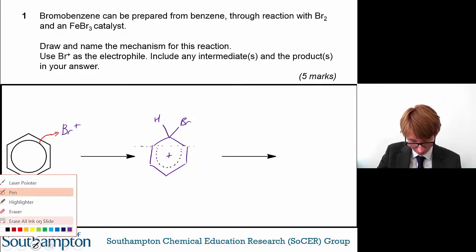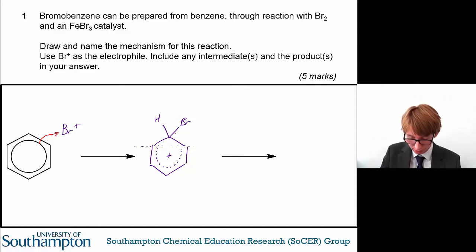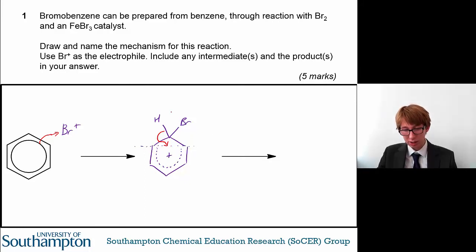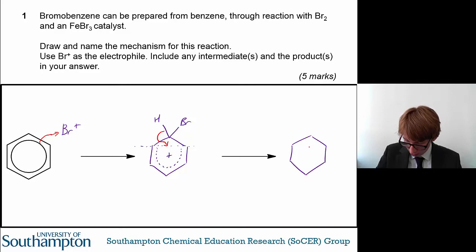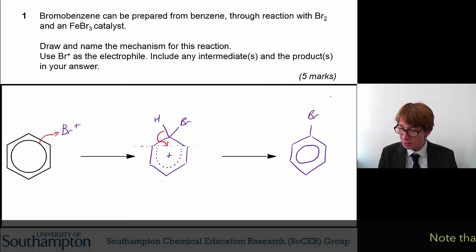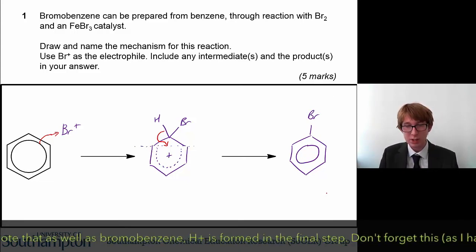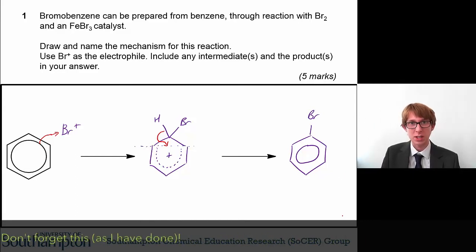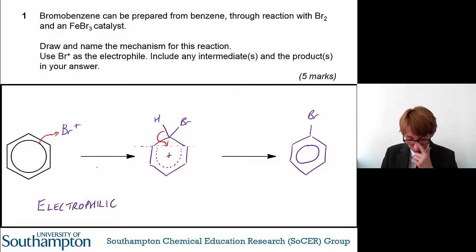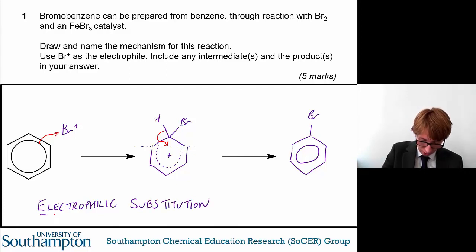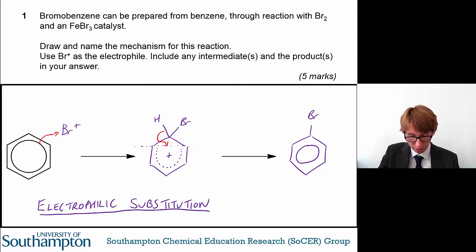What's going to happen next is you'll lose this hydrogen atom off of the ring, and you'll have the electron pair in the carbon-hydrogen bond rejoin the delocalized electron ring to reform that aromatic structure. And what you get is the now brominated benzene — bromobenzene. The question also asks you to include the name of this mechanism. The first reaction involves the reaction of benzene with an electrophile, so it's an electrophilic reaction. This bromine atom is substituting a hydrogen atom, so it's electrophilic substitution.